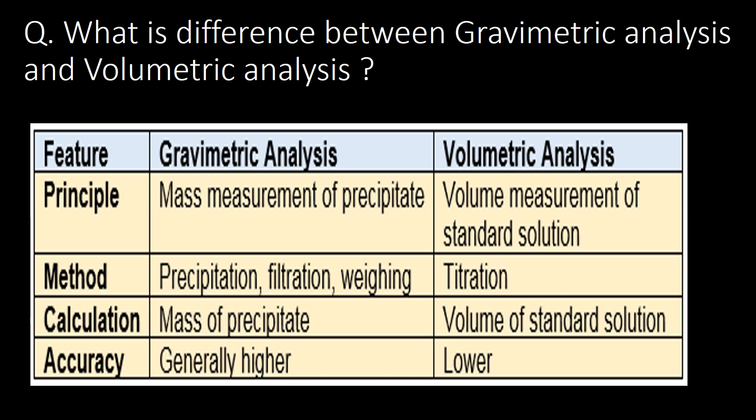In gravimetric analysis, calculation is done based on the mass of precipitate, whereas in volumetric analysis calculation is done based on the volume of standard solution. The accuracy level of gravimetric analysis is considered generally higher, whereas in volumetric analysis the accuracy level is considered comparatively lower.